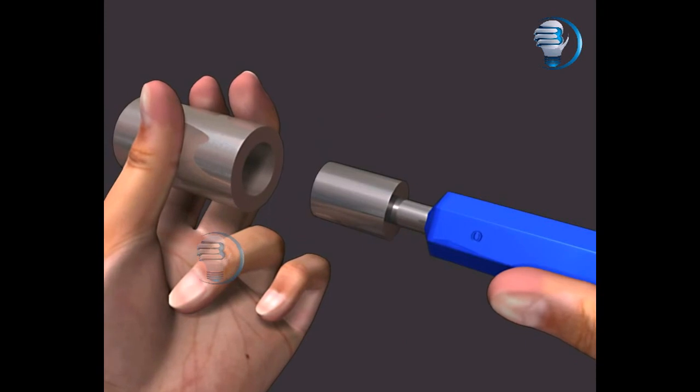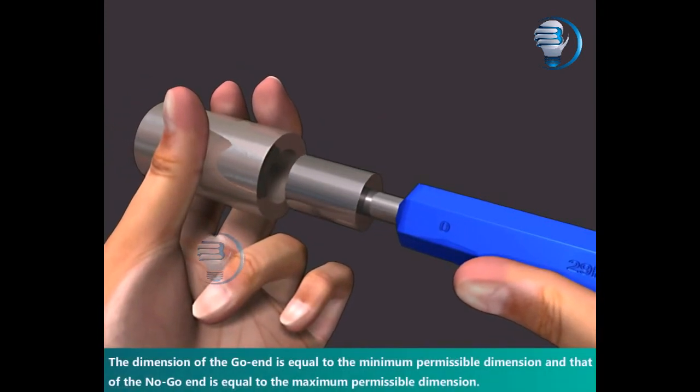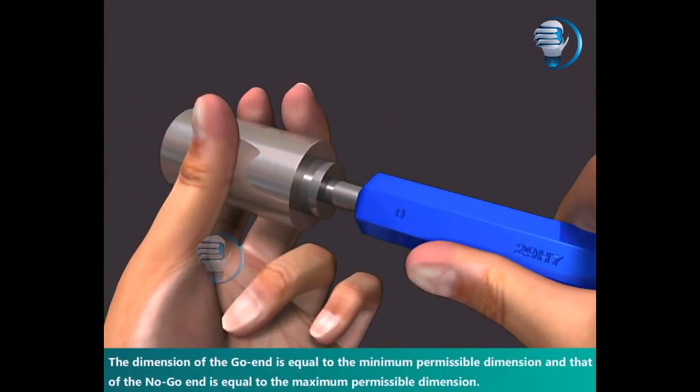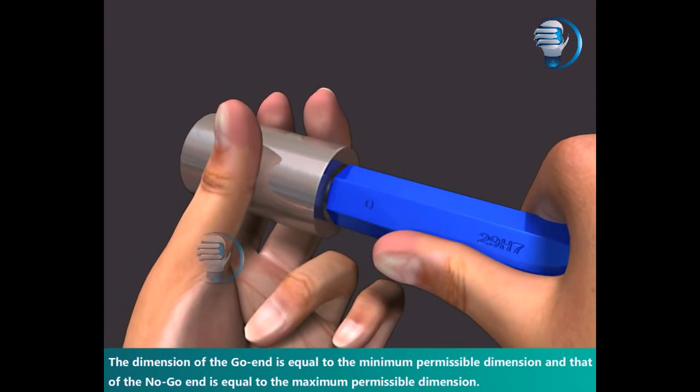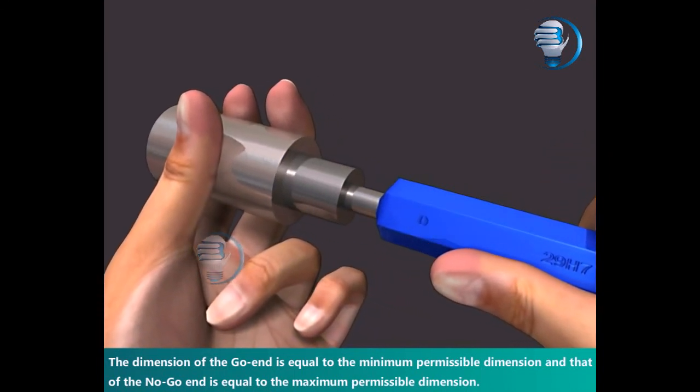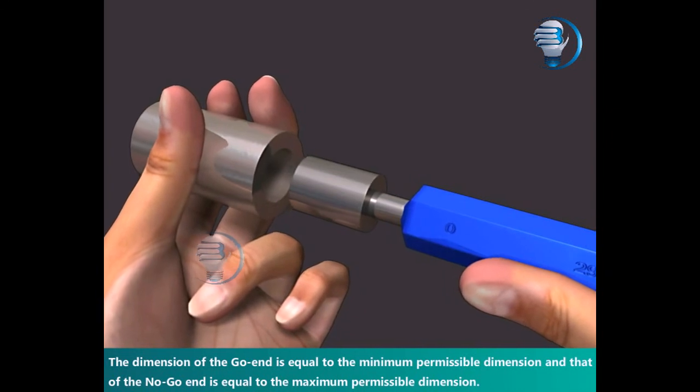Go. The dimension of the go end is equal to the minimum permissible dimension and that of the no-go end is equal to the maximum permissible dimension.